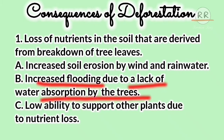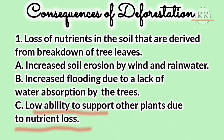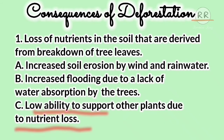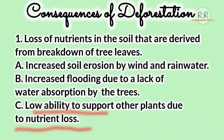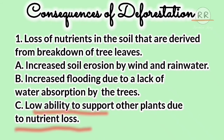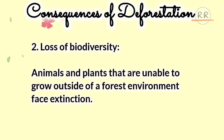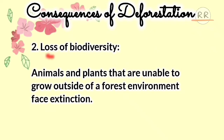तीसरा है: Low Ability to Support Other Plants due to Nutrient Loss। जमीन के अंदर nutrients बहुत कम हो जाएंगे क्योंकि पेड़ ही नहीं होंगे, तो जमीन उपजाऊ नहीं होगी। इसका result यह होगा कि नए पेड़ पौधे, छोटे herbs और shrubs उगना बंद हो जाएंगे, क्योंकि जमीन के अंदर nutrients ही नहीं होंगे तो पैदा होना बहुत ही मुश्किल हो जाएगा।